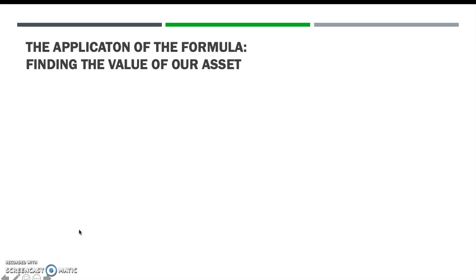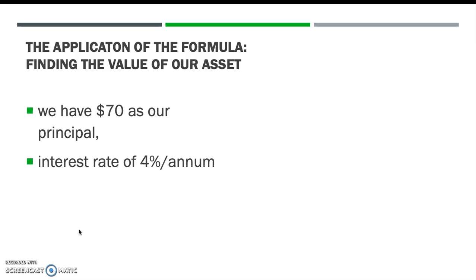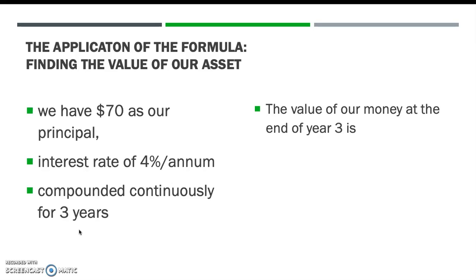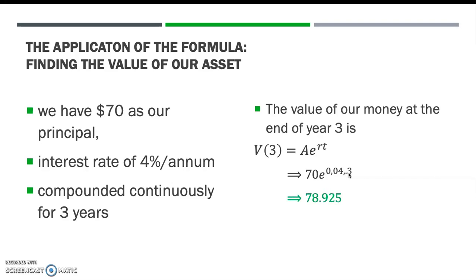Let's see the application of the formula we just obtained. Suppose we have $70 as our principal, invested at an interest rate of 4% per annum, compounded continuously for 3 years. What is the value of our money at the end of year 3? Using the continuous interest compounding formula, A equals 70, R equals 0.04, and T equals 3. Using a calculator, the principal of $70 will grow to $78.925 at the end of year 3.